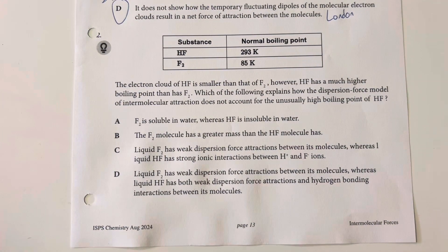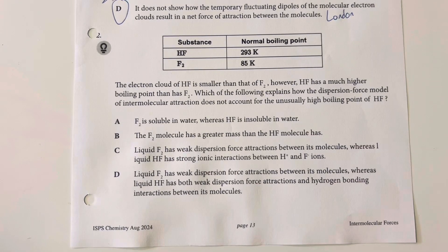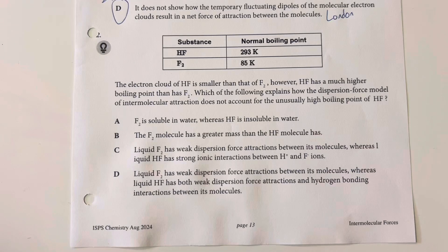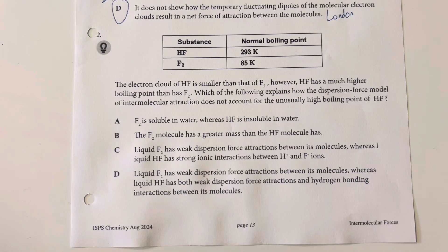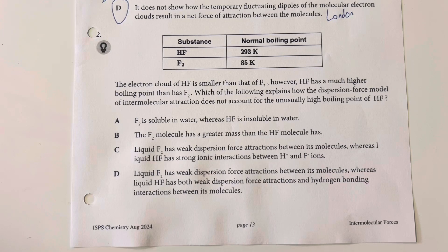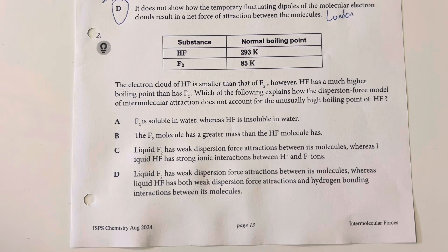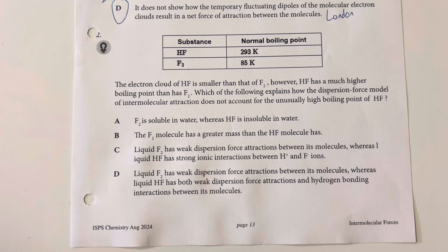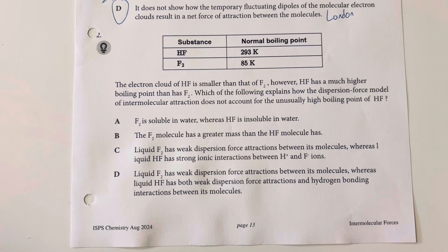The electron cloud of hydrogen fluoride is smaller than that of diatomic fluorine. However, hydrogen fluoride has a much higher boiling point than that of fluorine. What explains why the dispersion force model of intermolecular attraction does not account for the unusually high boiling point of hydrogen fluoride?